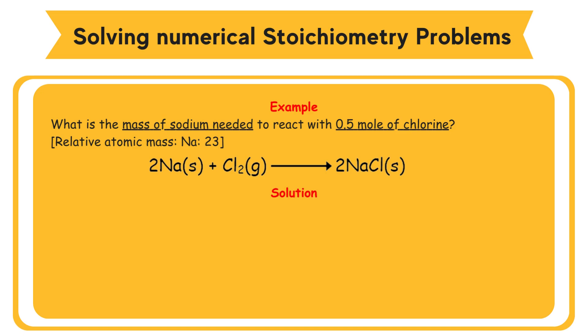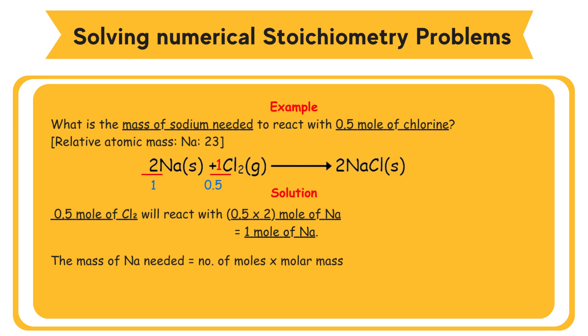Solution. Based on the equation, 1 mole of Cl2 reacts with 2 moles of Na. So, 0.5 mole of Cl2 will react with 0.5 times 2 mole of Na, or 1 mole of Na. The mass of Na needed equals number of moles times molar mass equals 1 times 23 equals 23 grams.